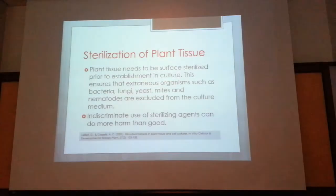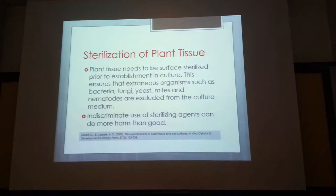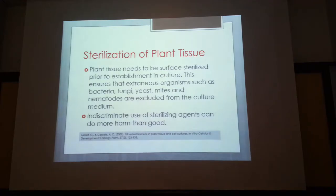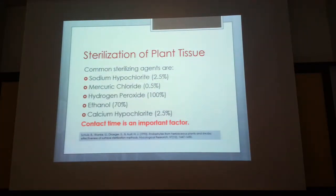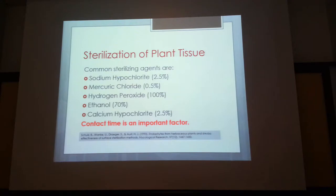Sterilization is done using different agents — commercial bleach diluted, mercury chloride, or other agents that kill bacteria and fungi. It is not recommended to use antibiotics or antifungals because they interfere with the plant's metabolic pathways. The options include ethanol, calcium hypochlorite, and sodium hypochlorite. Mercury chloride is toxic and requires precautions. Sodium hypochlorite has sodium ions which may harm sodium-sensitive plants, so calcium hypochlorite is a good alternative. Ethanol must be removed completely as it can kill tissue. An important factor is contact time.